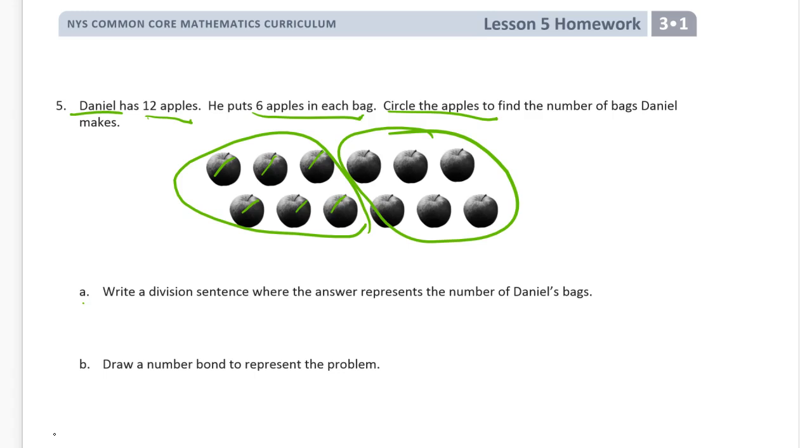Write a division sentence where the answer represents the number of Daniel's bags. So we have 12 apples, and we're dividing by six in each bag. The answer, or our quotient, is going to be the number of bags. There's two bags.